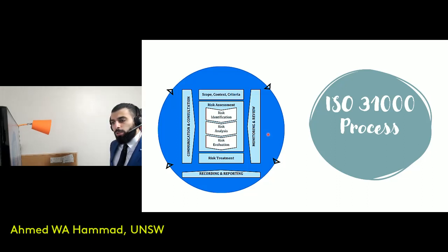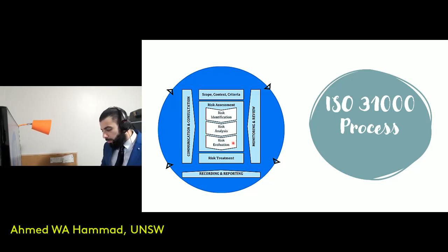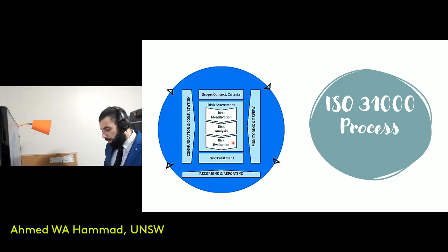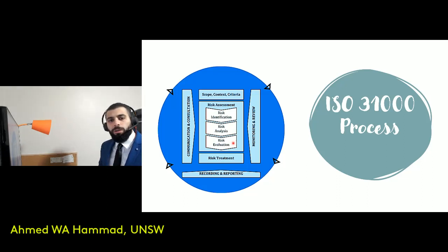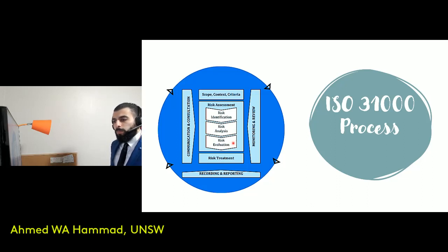Moving on to risk evaluation. This is where the risk appetite of the organization comes into play, and it's important because it is at this step where you would prioritize your risks. These are the three main components involved in the risk assessment.